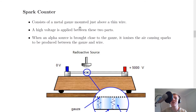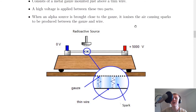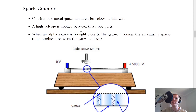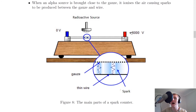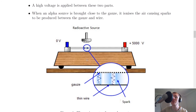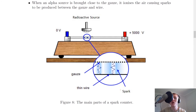Next we have the spark counter, which consists of a metal gauze mounted just above a thin wire. A high voltage is applied between these two parts — for example, 5000 volts. When an alpha source is brought close to the gauze, it ionizes the air, causing sparks to be produced between the gauze and the wire. Alpha radiation is used here because it is the most ionizing type of radiation.